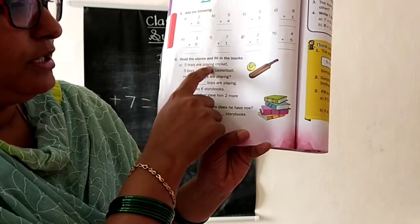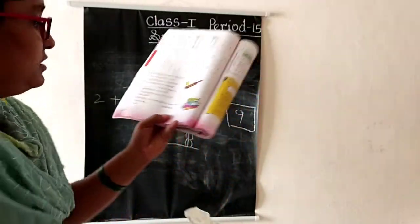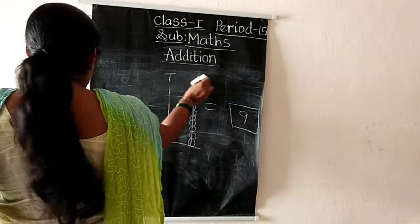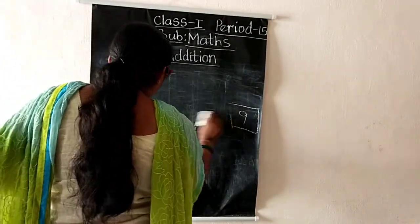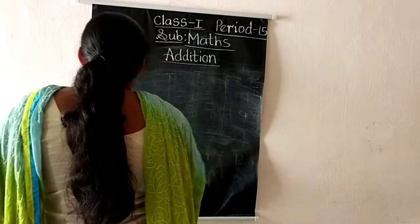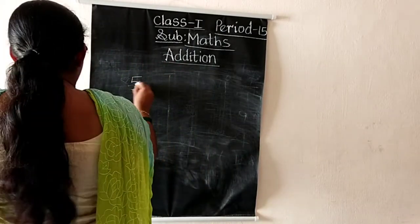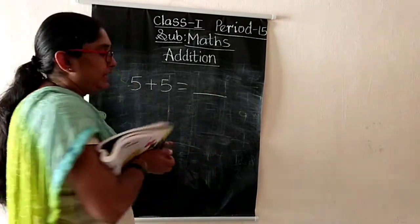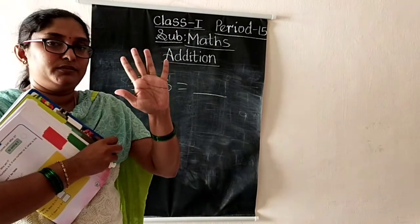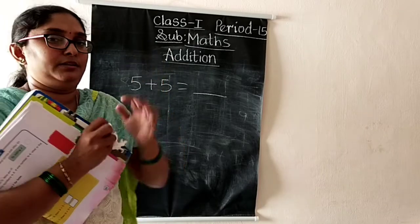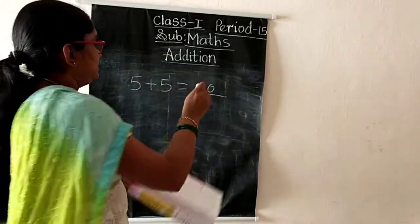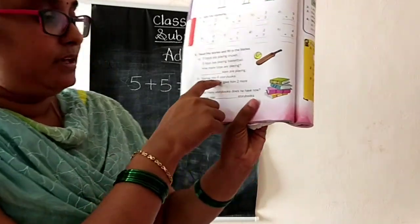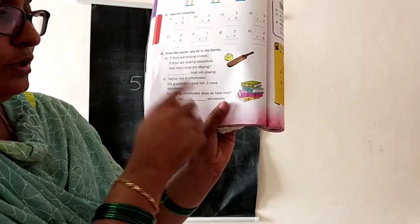Next, read the stories and fill in the blanks. Five boys are playing cricket, five boys are playing basketball. How many boys are playing totally? Five in the mind, five fingers: five after six, seven, eight, nine, ten. The answer is ten. Similarly, six plus two equals eight.